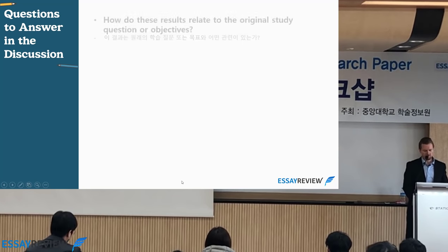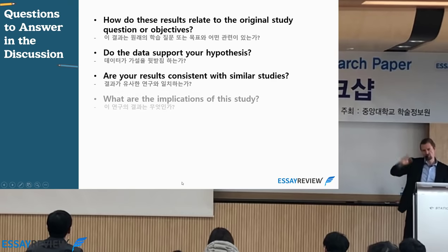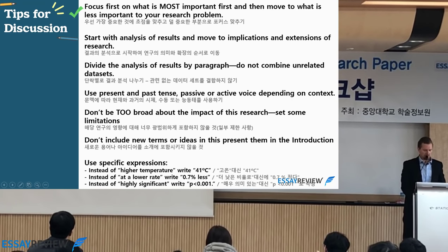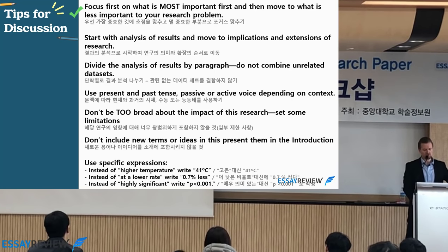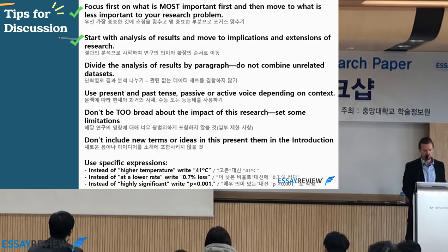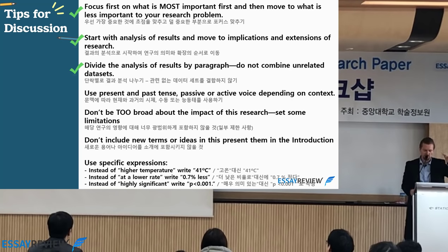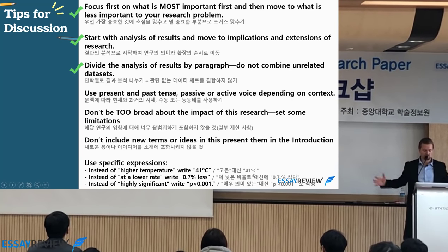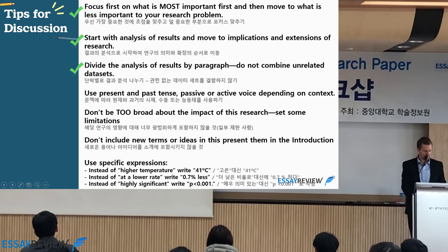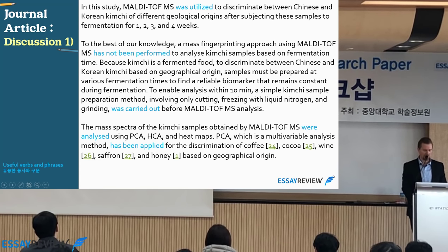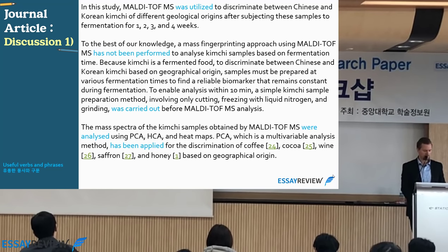Here are some tips for discussion: first focus on what is most important, then move to least important. Start with an analysis of your results and then move to implications — summarize the results, say why they're important, then what can be done to make them better. Divide the analysis by paragraph; don't smoosh everything together since the discussion section is very long. Each paragraph should have a separate idea.